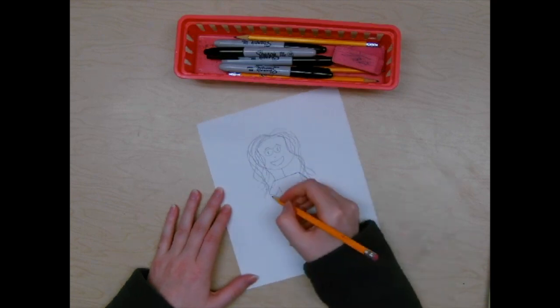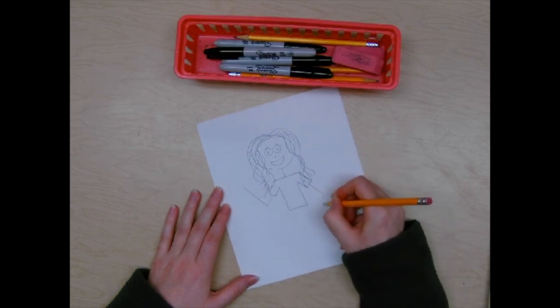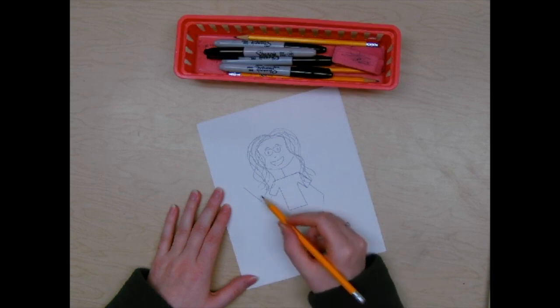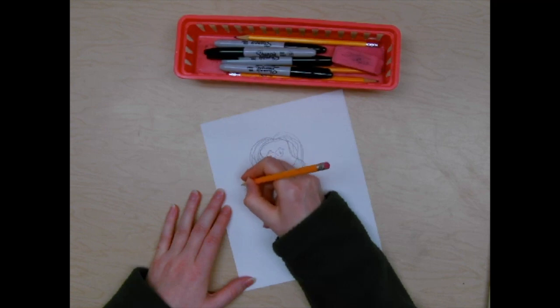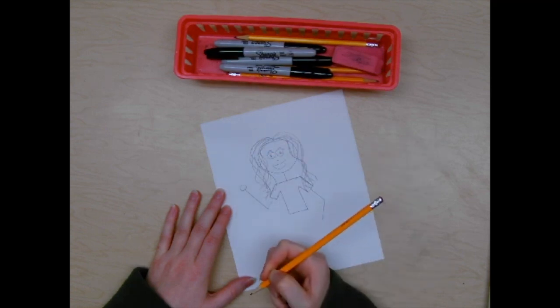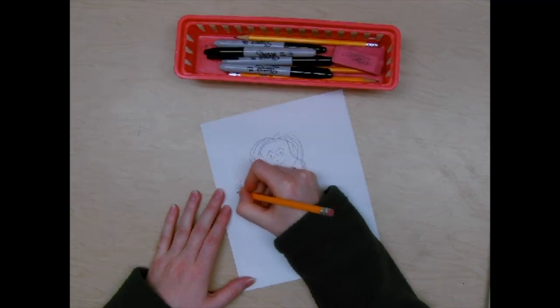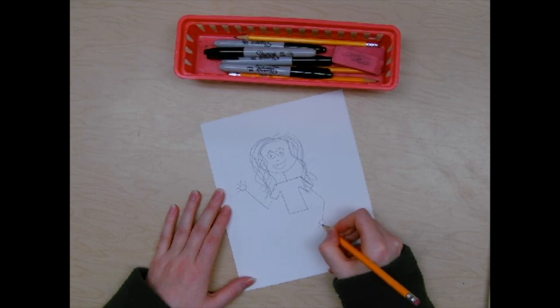Now I'm going to add arms coming out of those sleeves and maybe my person is waving. Now that I have my arms, which are two lines coming out of the sleeves, I'm going to give my person hands. To draw a hand, I'm going to start with a circle and then add little lines for the fingers. I'm going to do this to both hands.